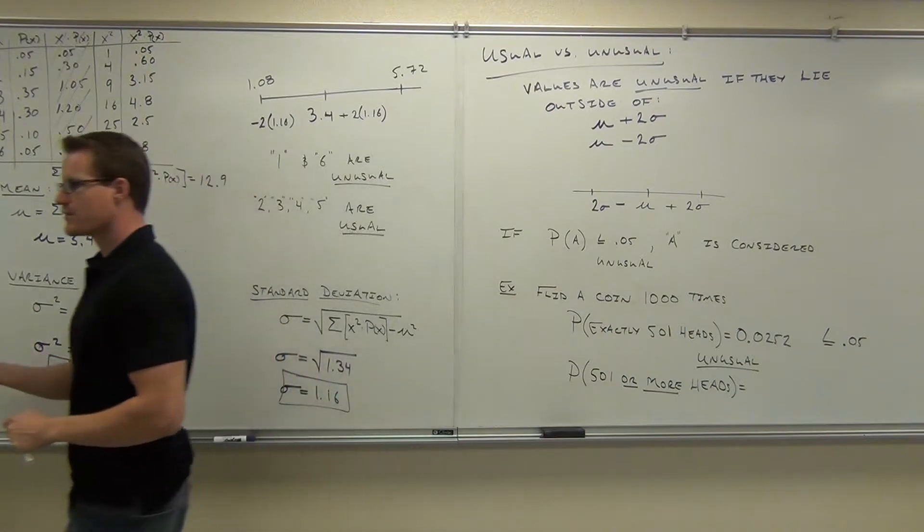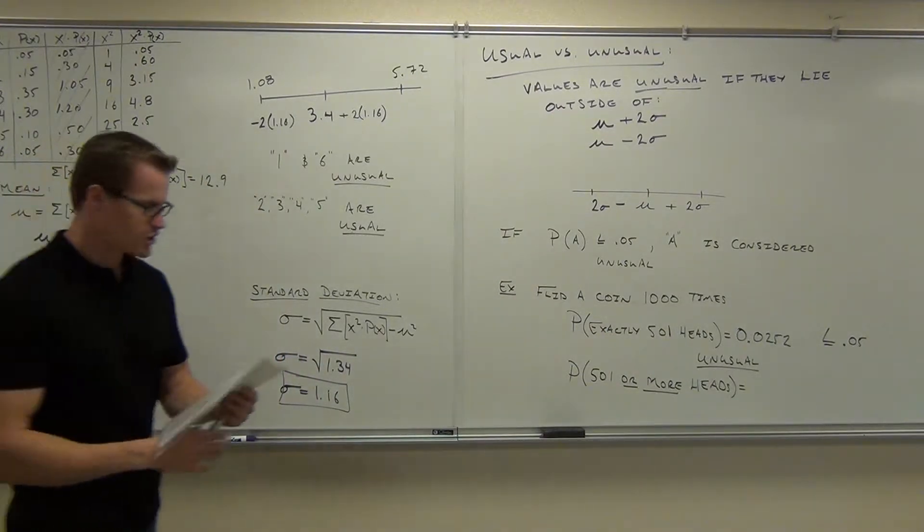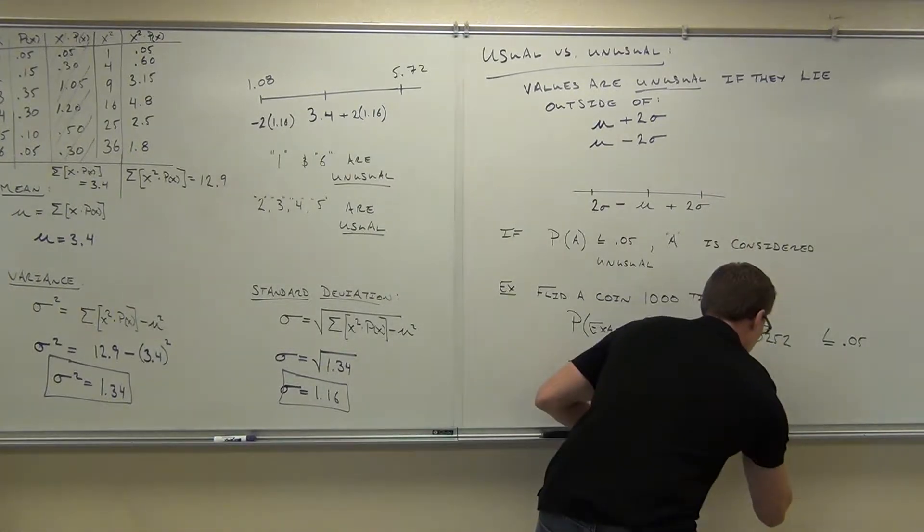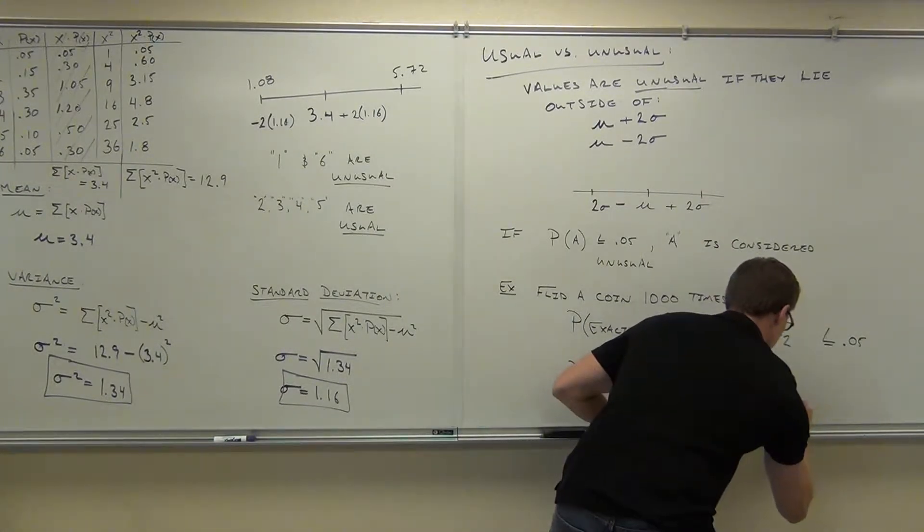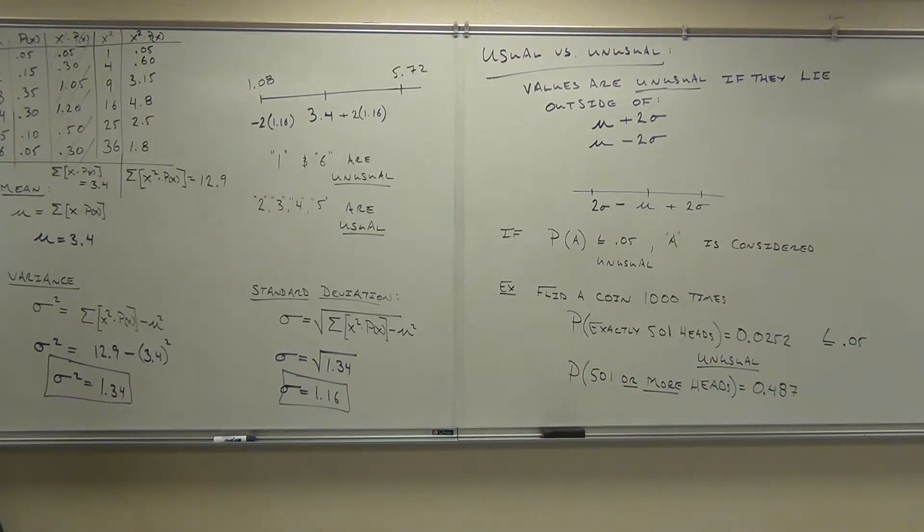The probability of getting 501 or more—502, 503, 504—is actually 0.487.